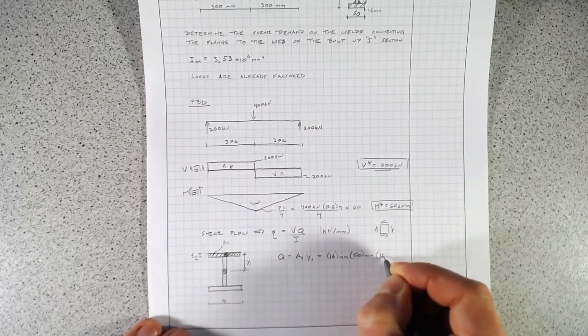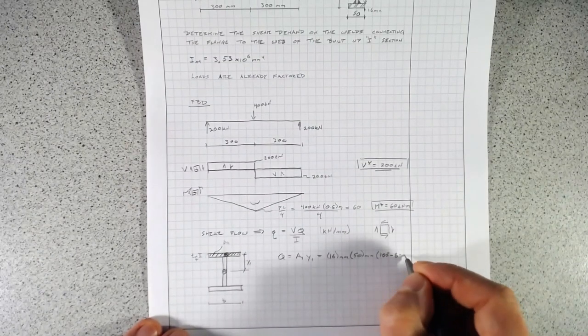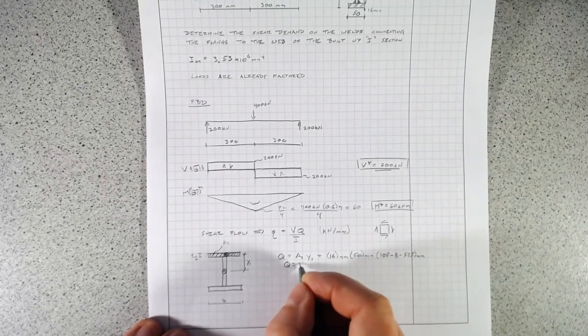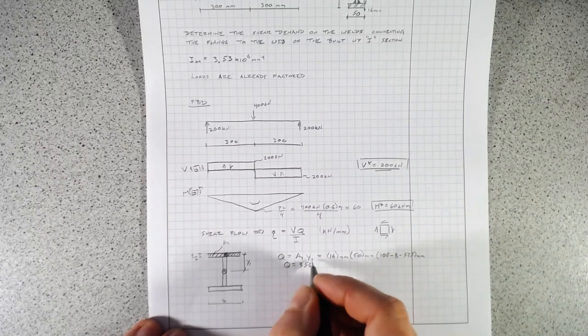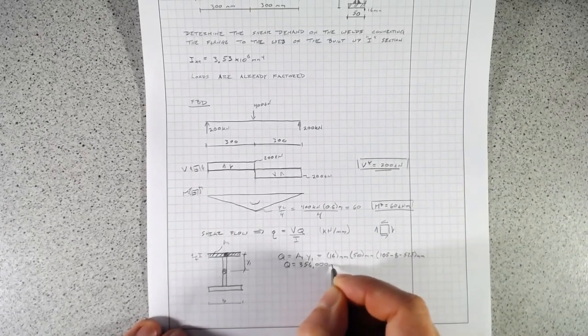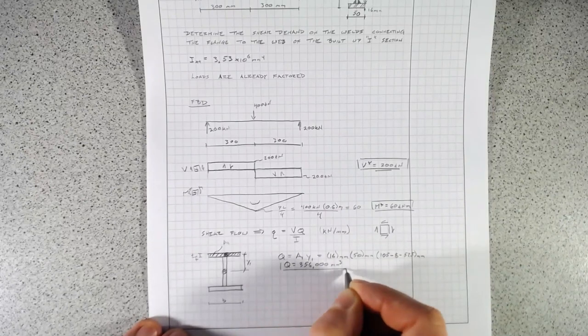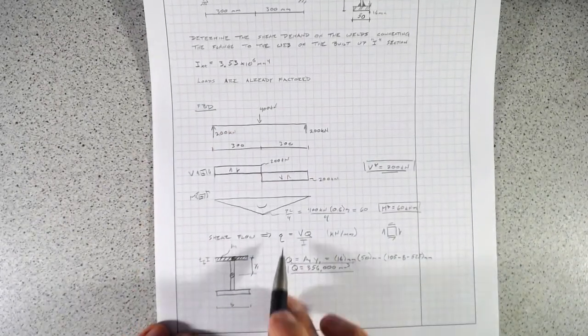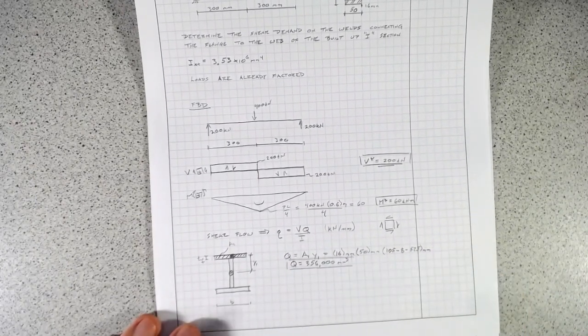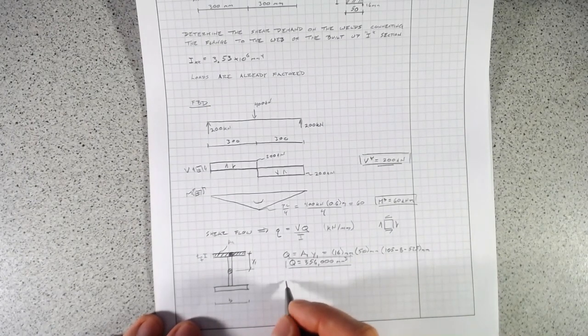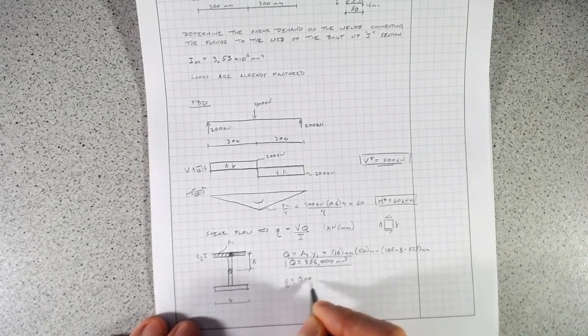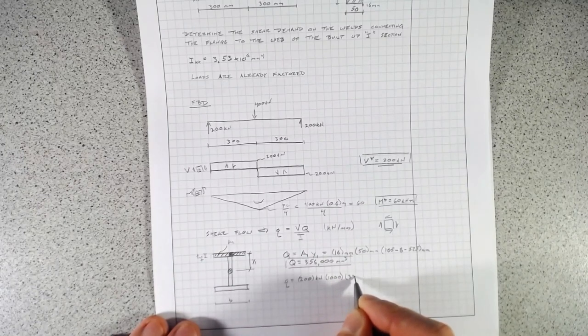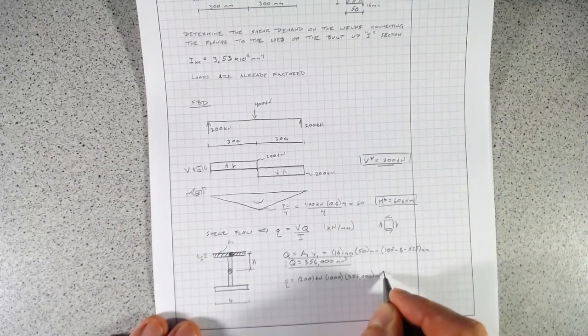That's going to be the distance Y1, and this area here is going to be A1, and that's going to be width B and thickness width of the flange. With that, we find out that Q is A1 times Y1. That equals 16 millimeters times 50 millimeters, coming straight out of our dimensions here, times this distance. The total depth is 105 millimeters, so halfway is 52.5 millimeters, and halfway through the flange is 8 millimeters. We'll subtract all that out. 105 minus 8 minus 52.5 millimeters. That gives us Q equal to 356,000 millimeters to the third.